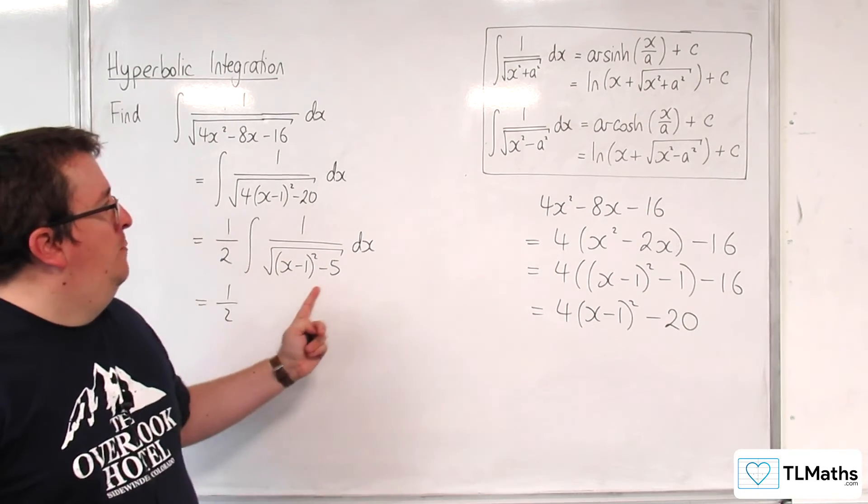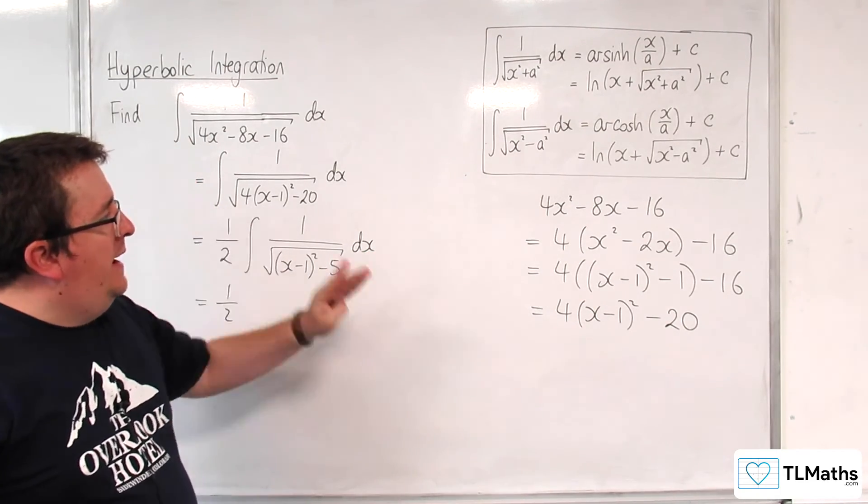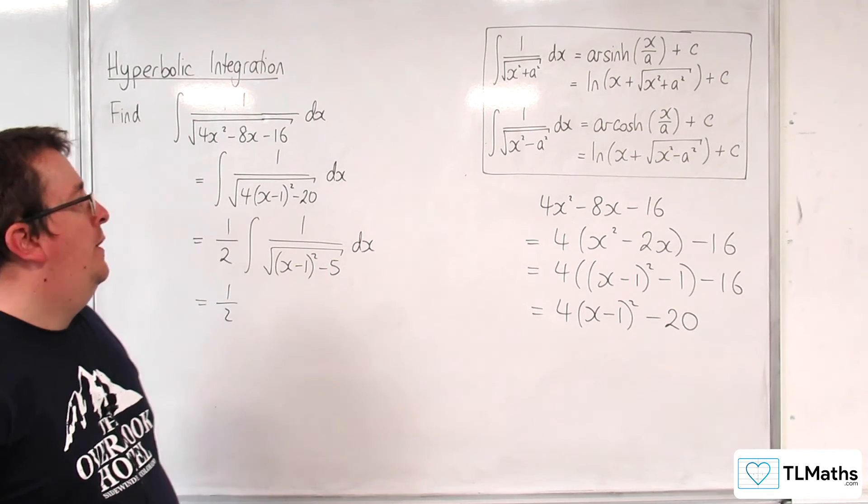Now, it is in the format that we want, where the x is x take away 1 and the a squared is 5. So, a is square root of 5.